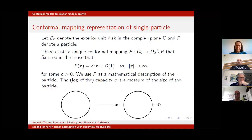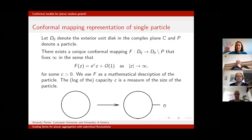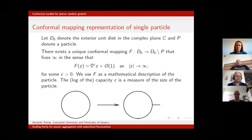The Riemann mapping theorem tells us that if we consider a particle to be any sort of shape in the exterior unit disc — for instance a little slit — then there's a unique conformal mapping from the exterior unit disc to the exterior unit disc minus this particle, which fixes infinity in the sense that there are no rotations at infinity. Looking at the Laurent expansion of this conformal mapping, its leading-order term is a positive real number we can write as e^c · z for some c ≥ 0.